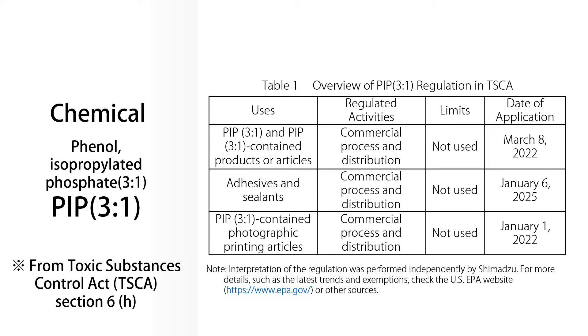EPA has started regulating phenol isopropylated phosphate-3-1, PIP-3-1, as a chemical substance that has persistent, bioaccumulative, and toxic chemicals.